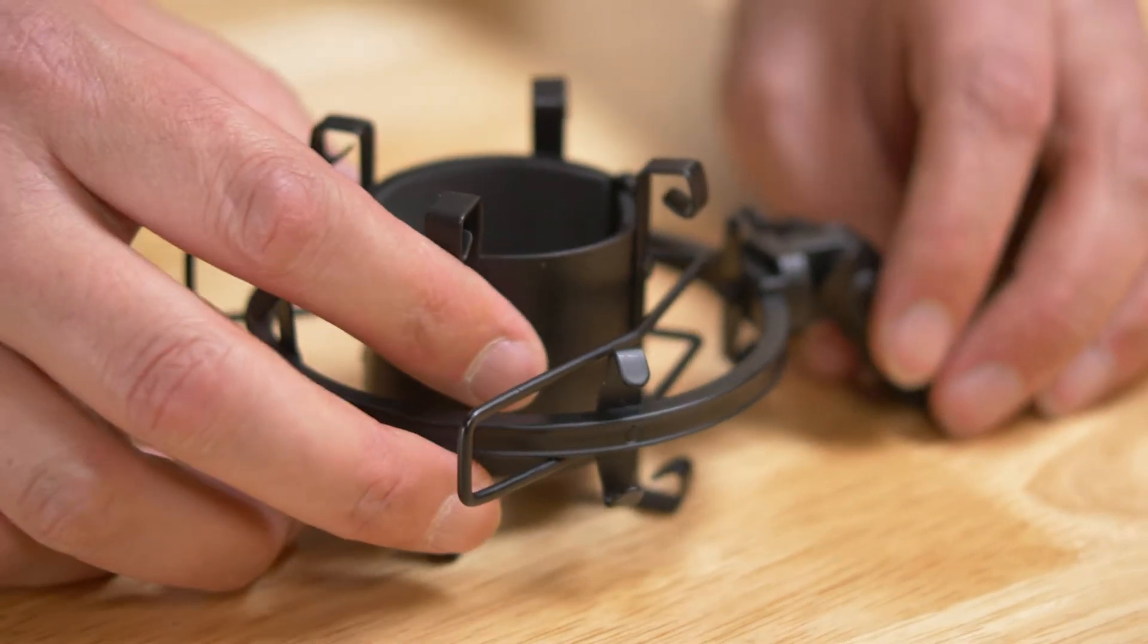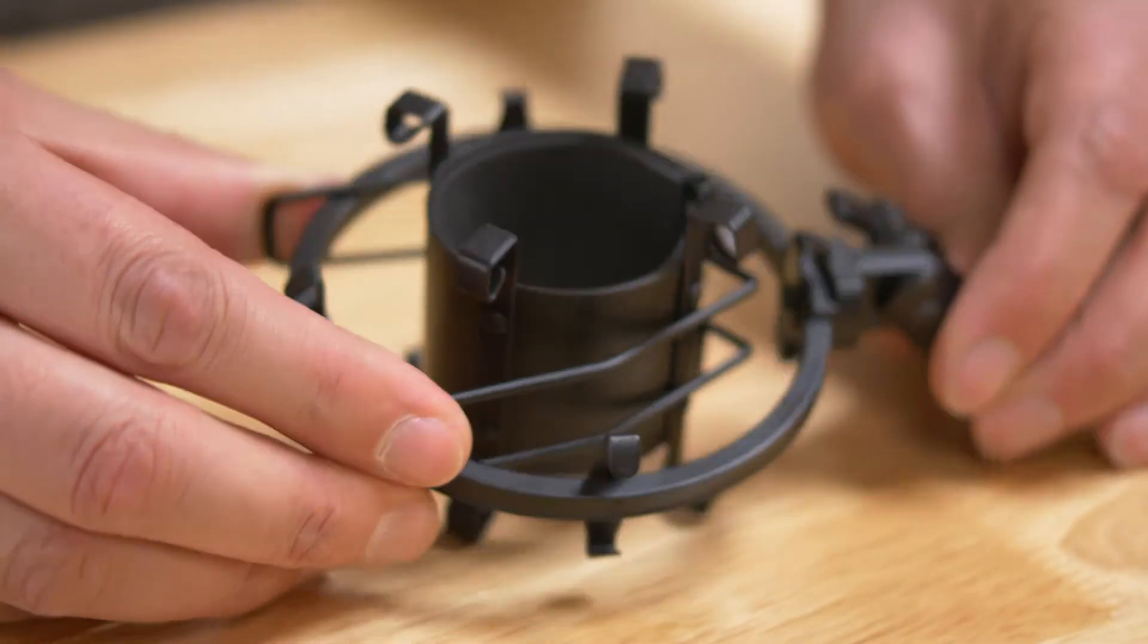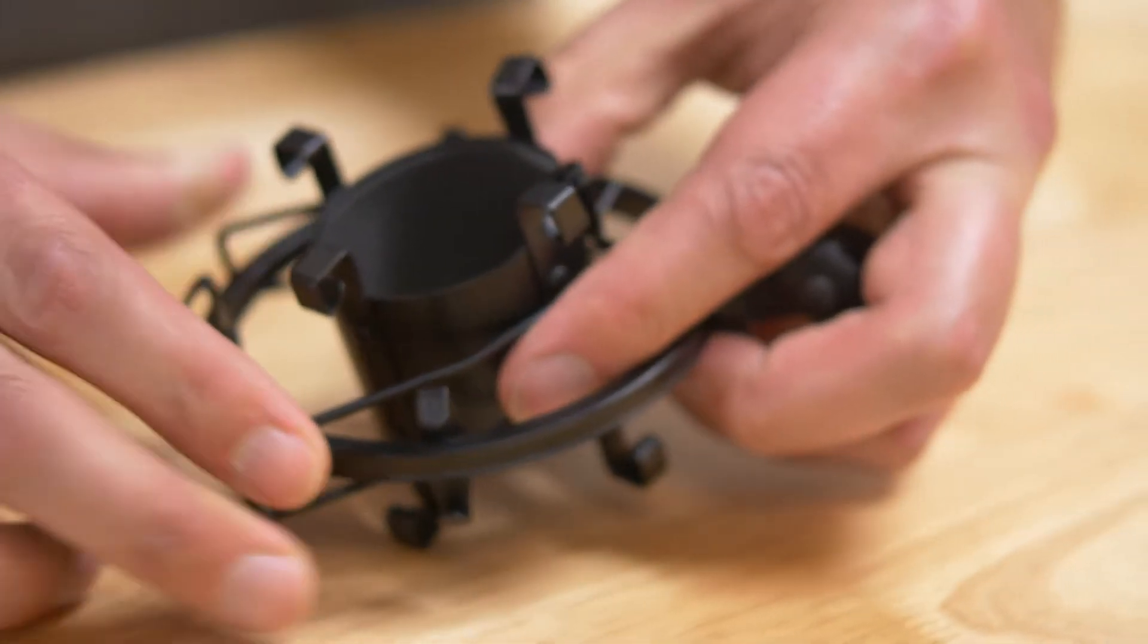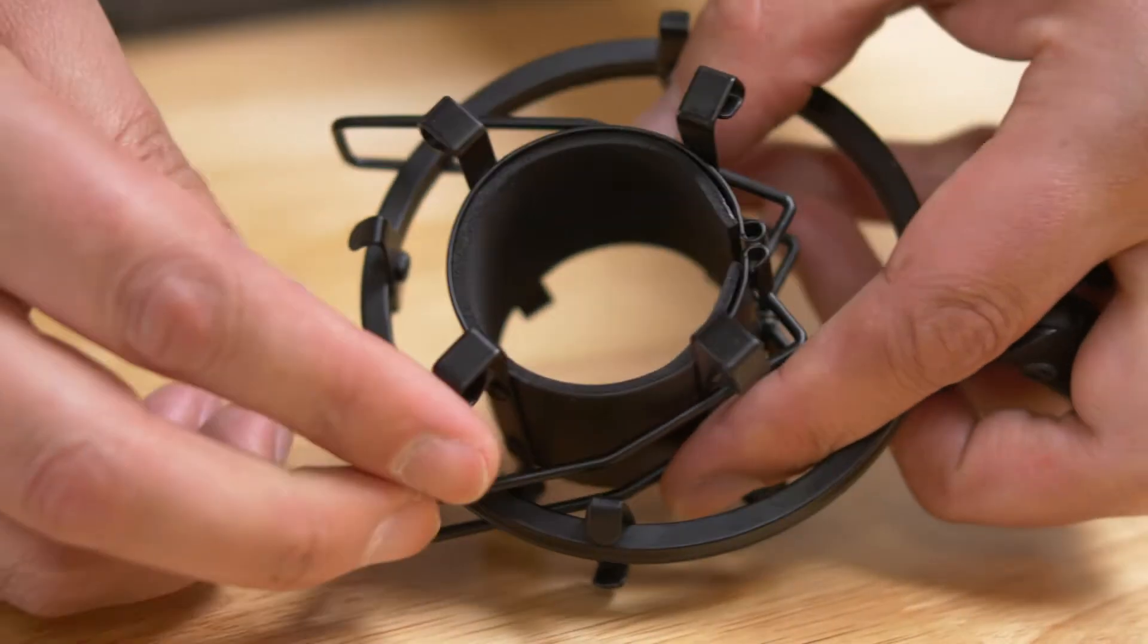And one thing that you'll want to note after the bands are on there, you're going to want to make sure the hooks for the inner cage are in between the hooks for the outer cage.